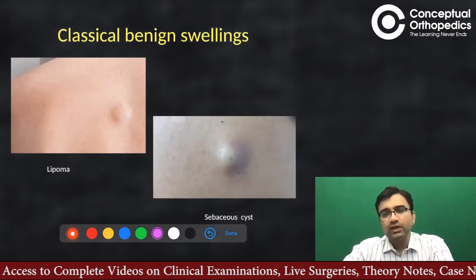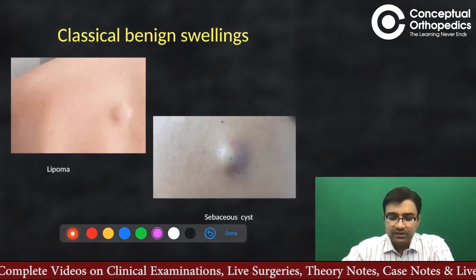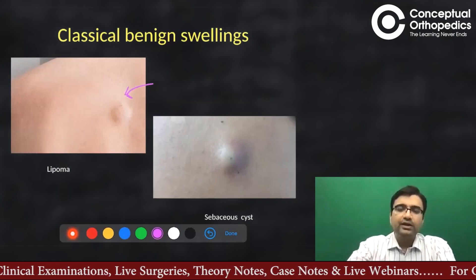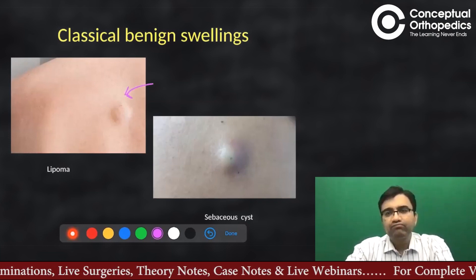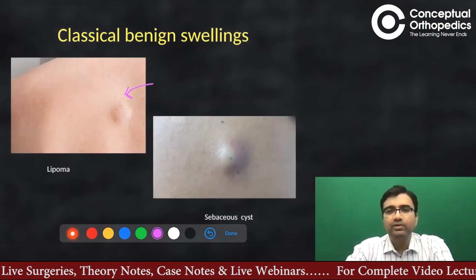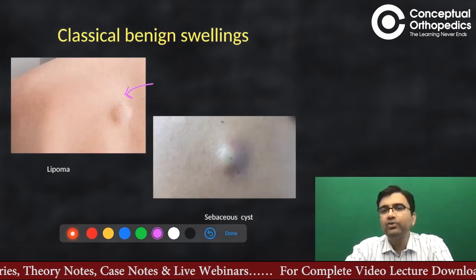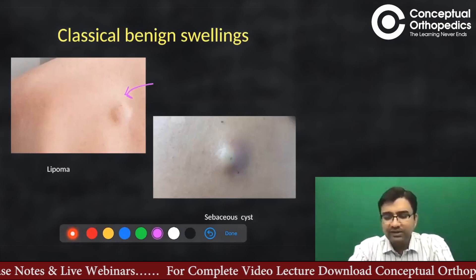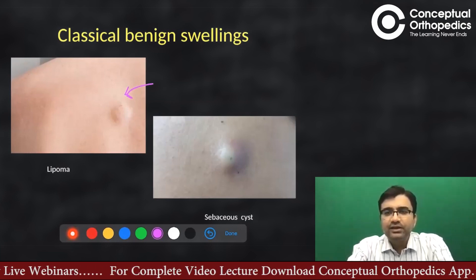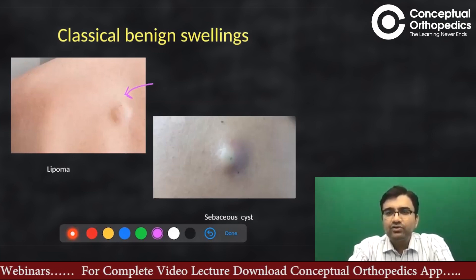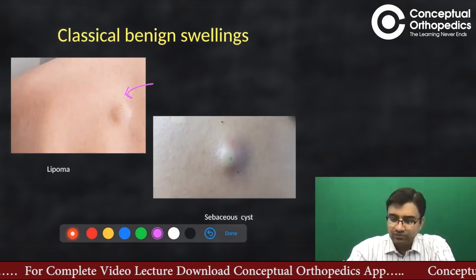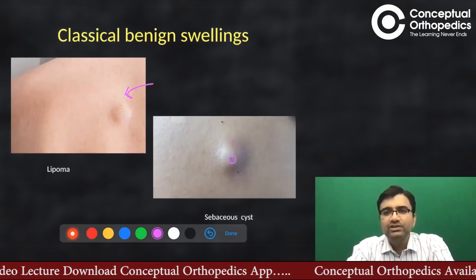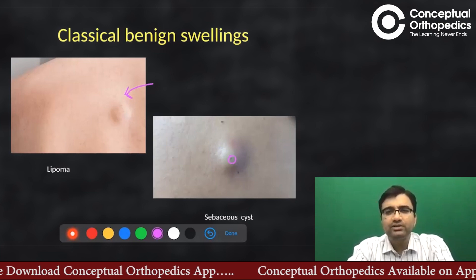A soft, fluctuant mass in the subcutaneous plane is classical of a lipoma — a simple ultrasound will help assess the lesion. Another similar lesion where you see a puncture, the punctum, from where some discharge is coming, tells you it could be a sebaceous cyst.